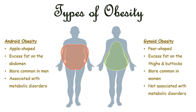Now let's look at the different types of obesity: android obesity and gynoid obesity. Android obesity is denoted by an apple-shaped body, as you can see in the diagram. In this case there is excess fat on the abdomen, and it is more common in men and is associated with metabolic disorders. On the other hand, gynoid obesity is denoted by a pear-shaped body, as you can see in the image. In this case excess fat is on the thighs and buttocks, and it is more common in women and is not associated with metabolic disorders.